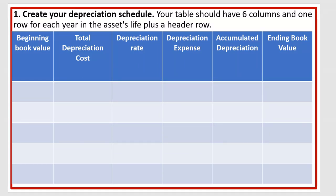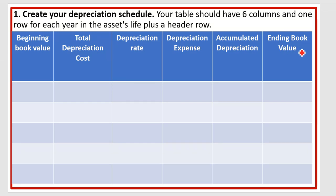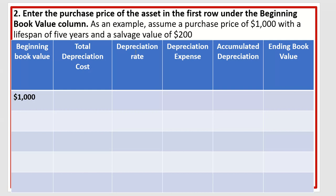To calculate depreciation using the sum of years digit method, you need to make a table with 6 columns: beginning book value, total depreciation cost, depreciation rate, depreciation expense, accumulated depreciation, and ending book value. I will show you how to fill this table one by one.